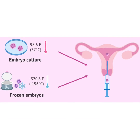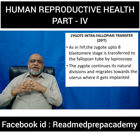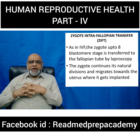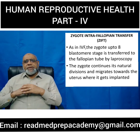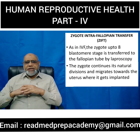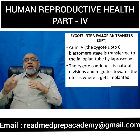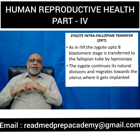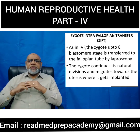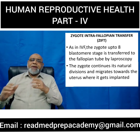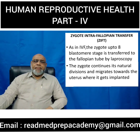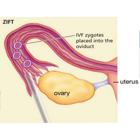What is zygote intrafallopian transfer, or ZIFT? As in IVF, the zygote which develops up to the 8-cell blastomere stage is transferred into the fallopian tube by laparoscopy. Through ultrasound guidance, the zygote is inserted into the fallopian tube, where it continues its natural divisions and migrates towards the uterus to get implanted into the endometrium.